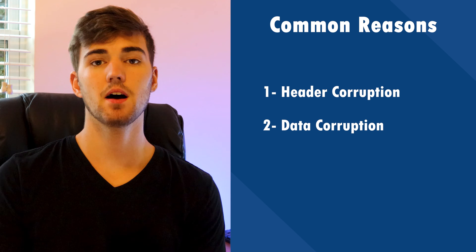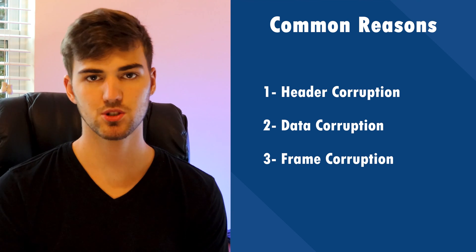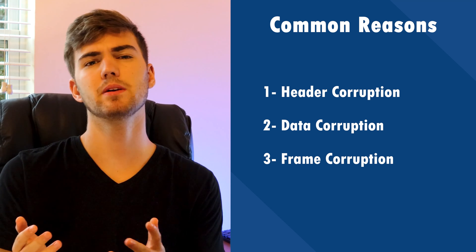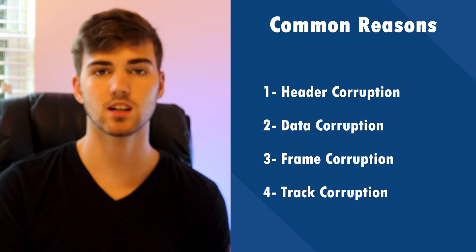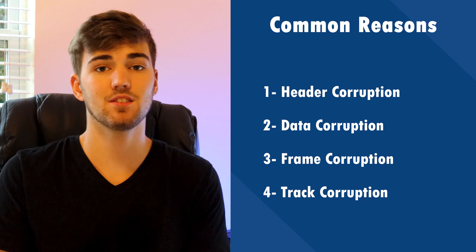Reason three — frame corruption. Another technical reason behind video corruption is frame alteration. If you have tried to manipulate the frame settings in the video while editing it using any software, you might have accidentally damaged its frame settings. In this situation, your video won't play smoothly and you'll encounter many unexpected pauses. Reason four — track corruption. You may also fail to play the video if its audio or video tracks are missing. Each video file has separate tracks to store its audio or video information, and if one of these tracks goes missing, you might not even be able to play the video at all.